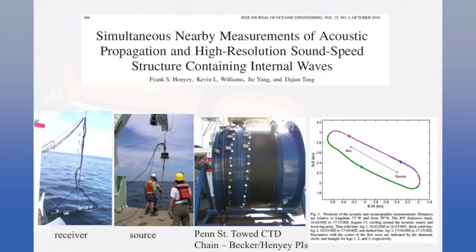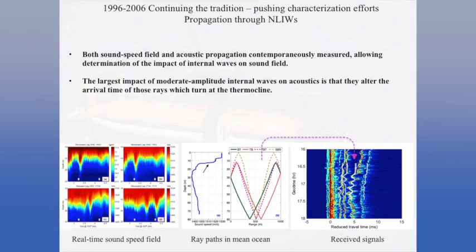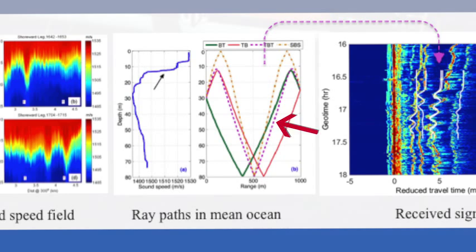As a final example, this is from Shallow Water 06, in which there were simultaneous measurements of not only acoustic propagation but of the oceanography — in this case nonlinear internal waves over about a two-kilometer path. The internal waves were measured simultaneously with the acoustics, which allowed us to look at the sound speed in an instantaneous way and use that sound speed profile in a model to understand the acoustic received. There's a path here that touches the thermocline twice, and because we have these kind of simultaneous measurements, the model is able to predict the data very well.